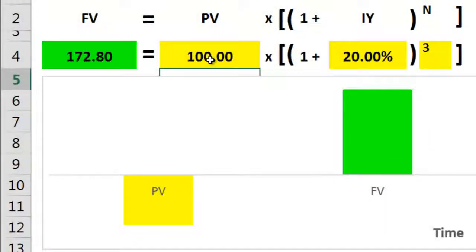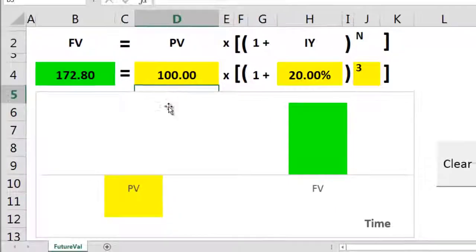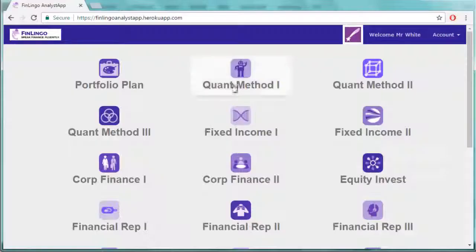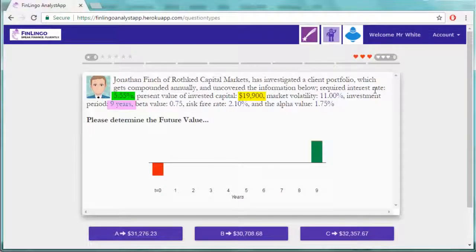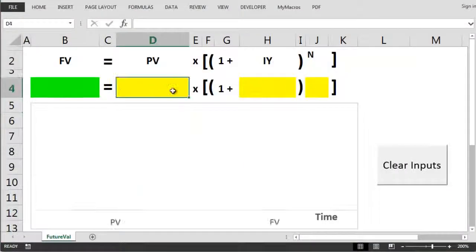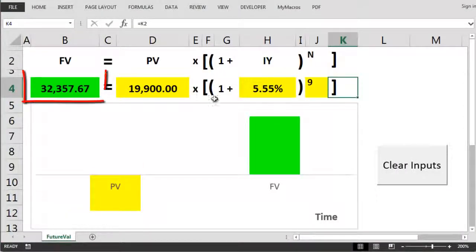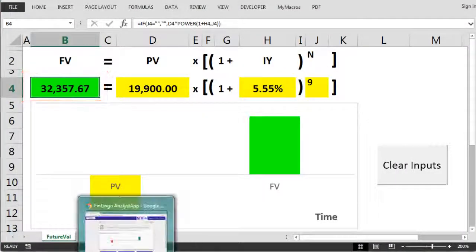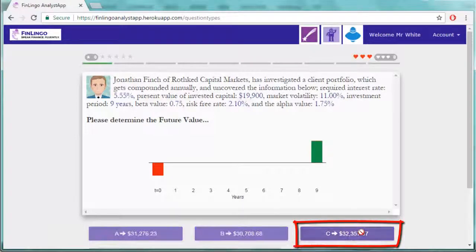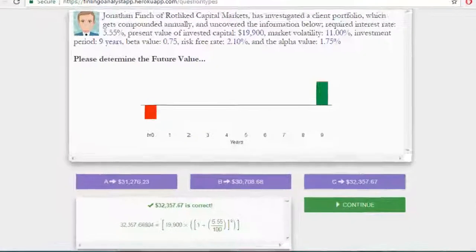Now let's try a question on finlingo.com. Get the correct information, ignore anything trying to catch us out. Plug the numbers into the equation, then look for the right answer on finlingo. Keep going with the infinite questions until you've burned this equation into your brain.